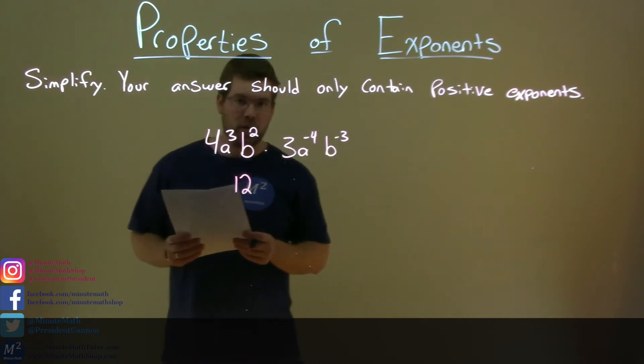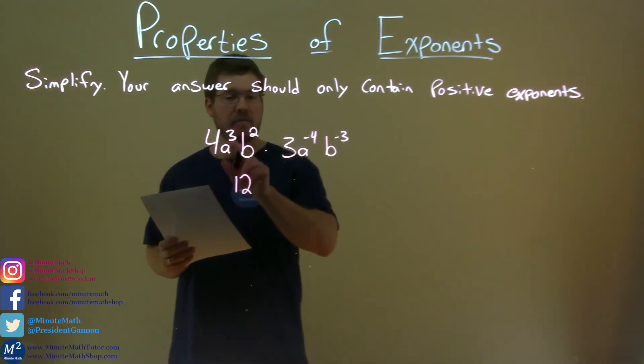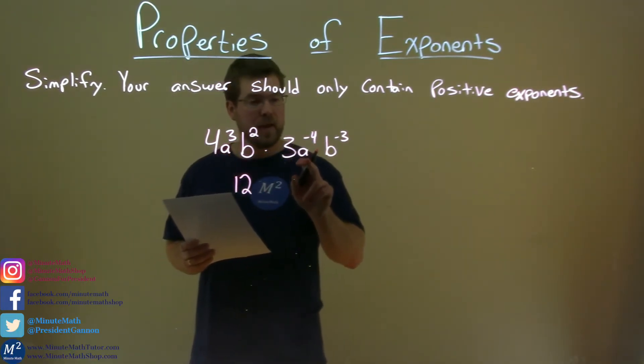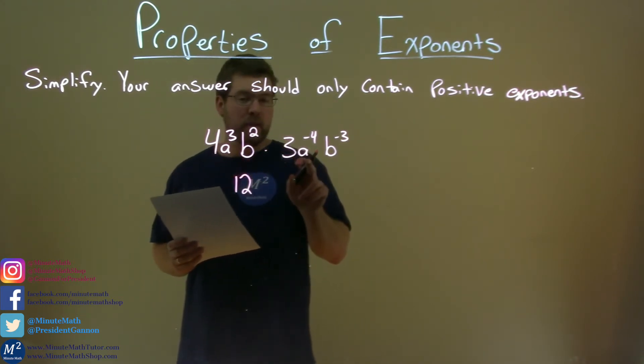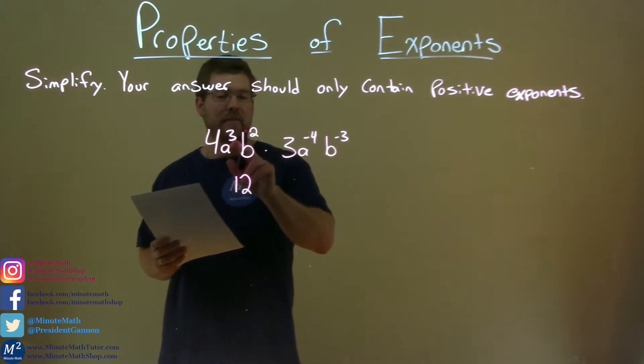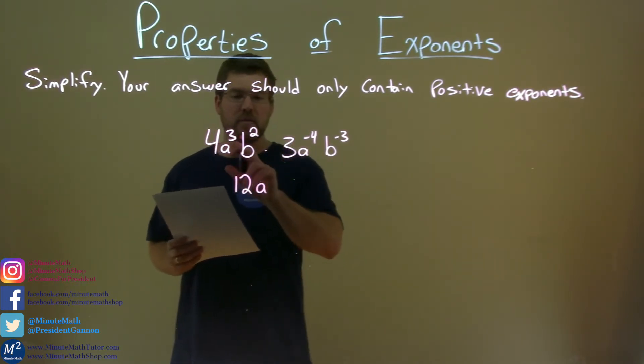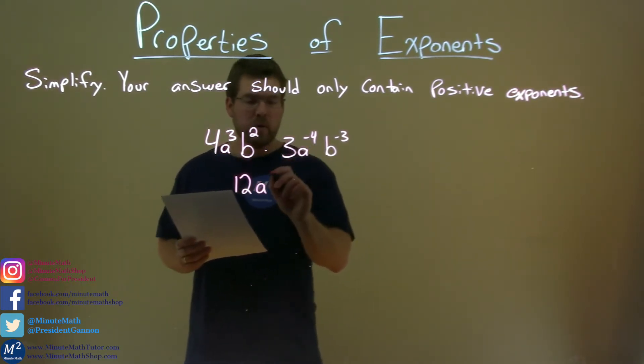Now we have our variables. We have a³ times its like term a⁻⁴. When we multiply with the same base, our rules state that we have to add the exponents. So we have a to the 3 plus negative 4, which is a⁻¹.